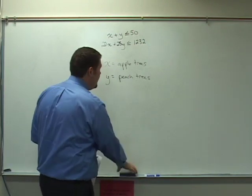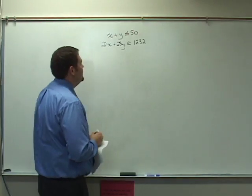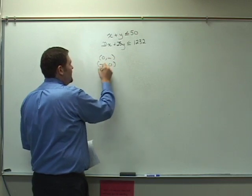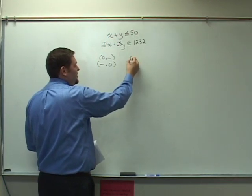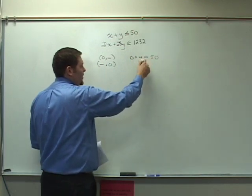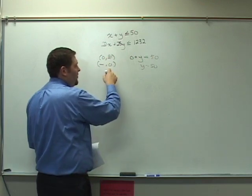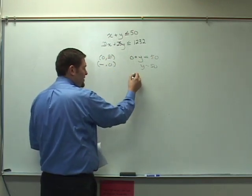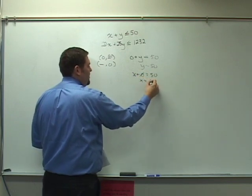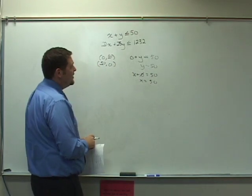We're going to solve that using the same intercepts method that we were using yesterday. So I'm going to put 0 comma blank and blank comma 0. Start with the first equation. I let x be 0, and I want this to be equal to and find the line. So I find that y is equal to 50. And if I repeat the process with y equaling 0, I have x plus 0 equals 50, and then find out that x equals 50. There's the first linear inequality.